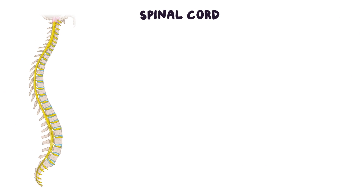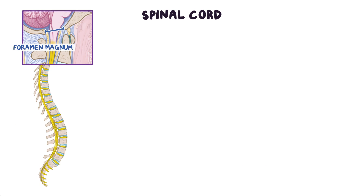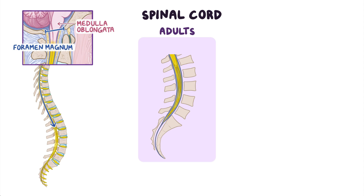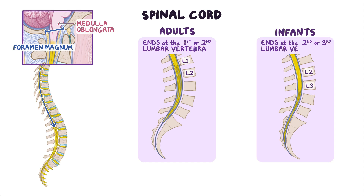The spinal cord starts at the foramen magnum, where it is continuous with the medulla oblongata, which is the most caudal portion of the brainstem. It then extends inferiorly through the vertebral canal. In adults, it usually ends at the level of the first or second lumbar vertebra. In infants, it usually ends at the second or third lumbar vertebra. The tapered end of the spinal cord is called the conus medullaris.